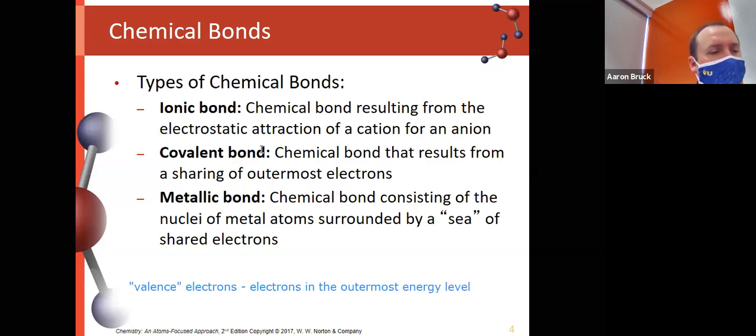If I look at krypton, its configuration is argon 4s2 3d10 4p6 - that fourth energy level has eight electrons in it, and as far as outer energy levels go that is pretty much the maximum. Krypton doesn't do a whole lot of bonding because it has no real need to. In ionic bonds, the formation of the ions is to get to a stable charge that leaves behind an outermost energy level that is full.